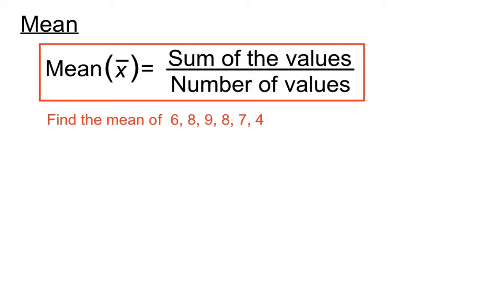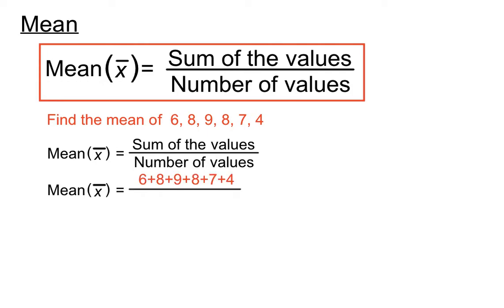To find the mean of 6, 8, 9, 8, 7, and 4, we'll find the sum of the scores and put them over the number of those values. So if we add those up—6 plus 8 plus 9 plus 8 plus 7 plus 4—and put that over how many values we have there, you can see that we have 6 values, so we create that little fraction.